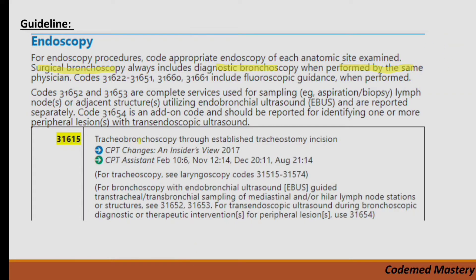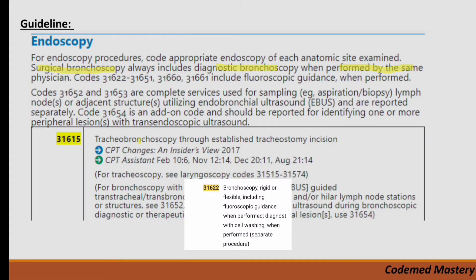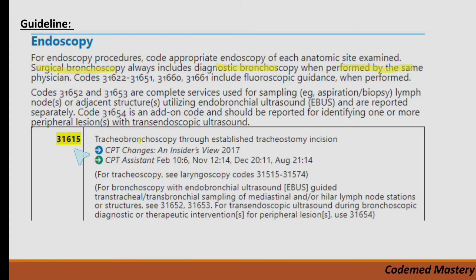Codes 31651 to 31653 are complete services used for sampling a lymph node or adjacent structure utilizing endobronchial ultrasound — highlight these guidelines in your CPT book, page 218. Also highlight code 31615 for tracheobronchoscopy through established tracheostomy incision, and code 31622 for bronchoscopy, rigid or flexible, including fluoroscopic guidance — this is an important code.